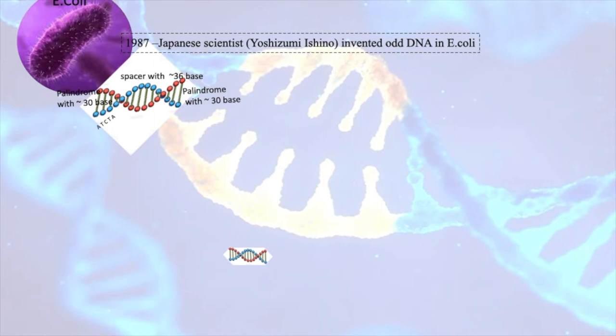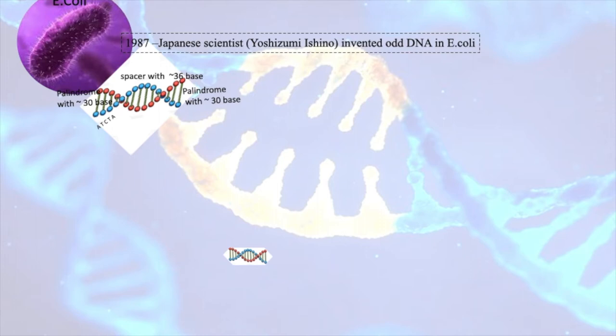During 1987, a group of Japanese scientists was working on a bacterium called E. coli. While working on this bacterium, they found an odd DNA sequence. What was unique about this DNA was that at both ends it was palindromic — meaning it reads the same from left to right and right to left. For example, the word 'madam' reads the same both ways. The palindrome was present on both sides, consisting of 30 bases, separated by a spacer of 36 bases.